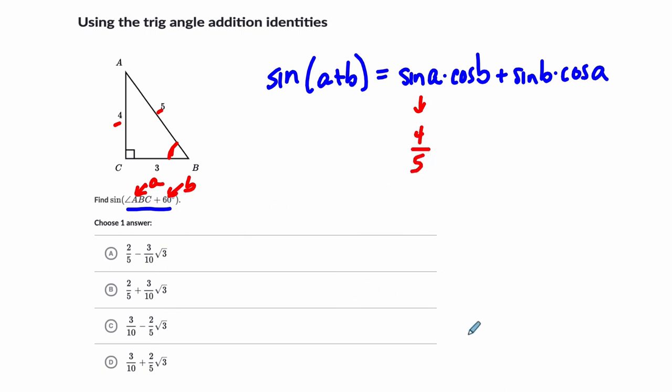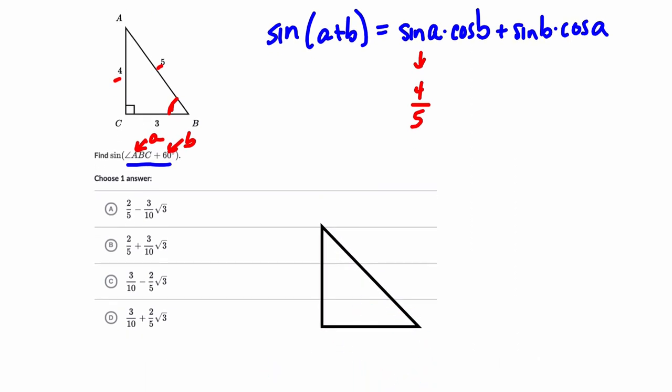The cosine of a 60 degree angle goes back to our special triangles. Let me draw this correctly. So this is 30, 90, and 60. And if our hypotenuse is 1, the side across from the 30 degree angle is a half, and this is radical 3 over 2.